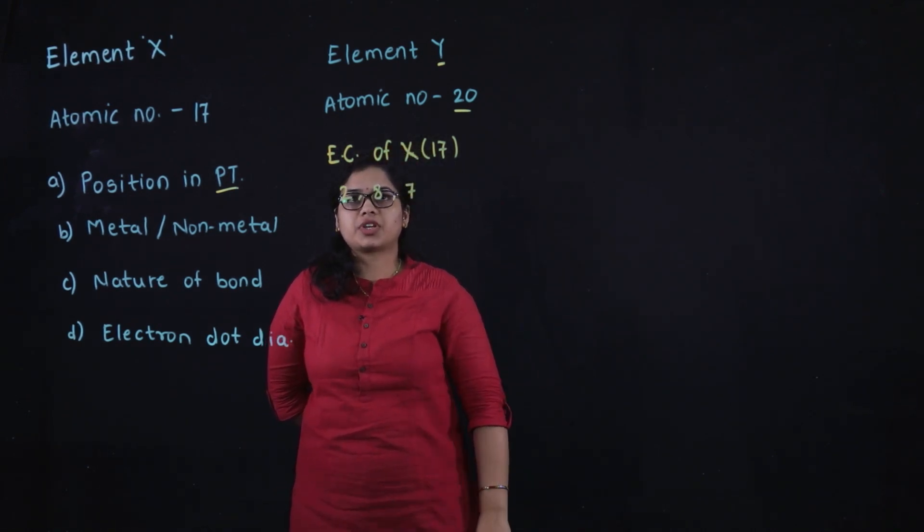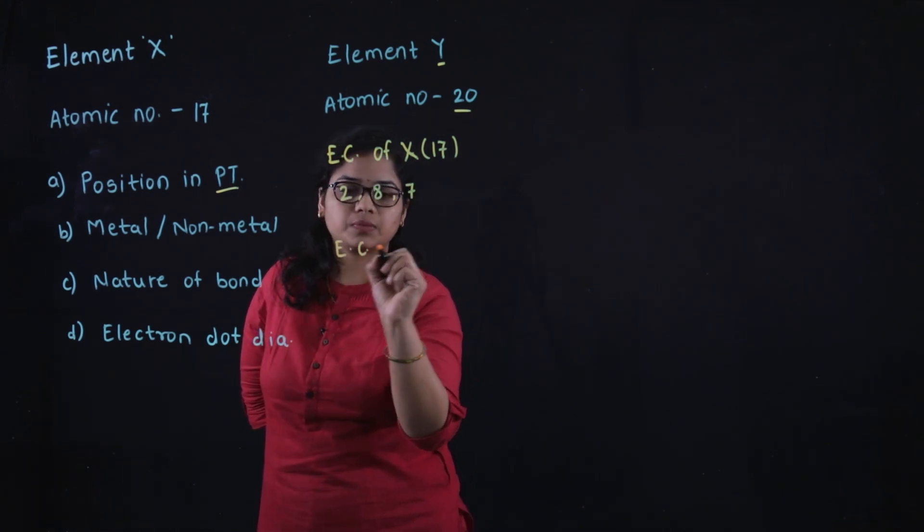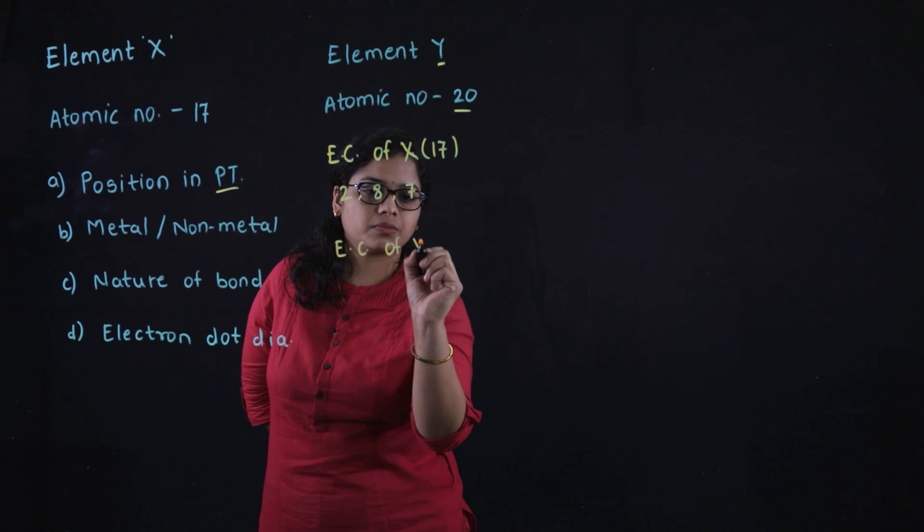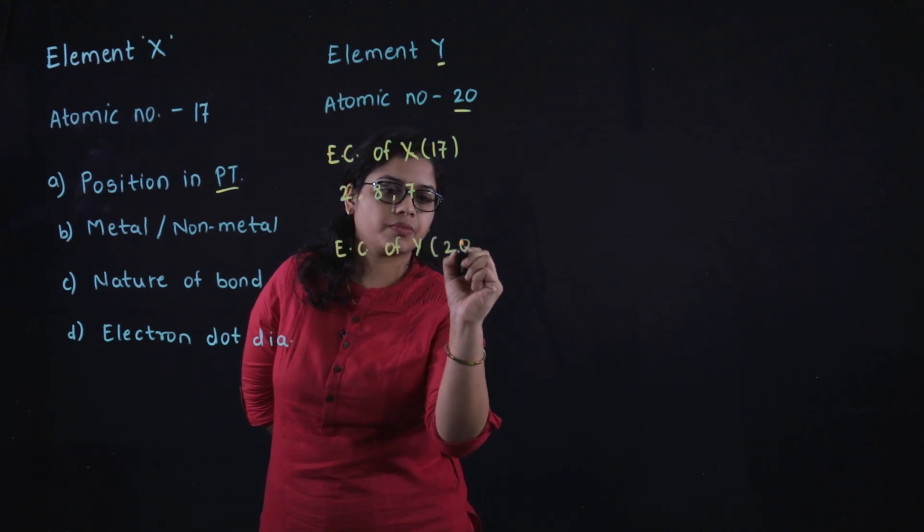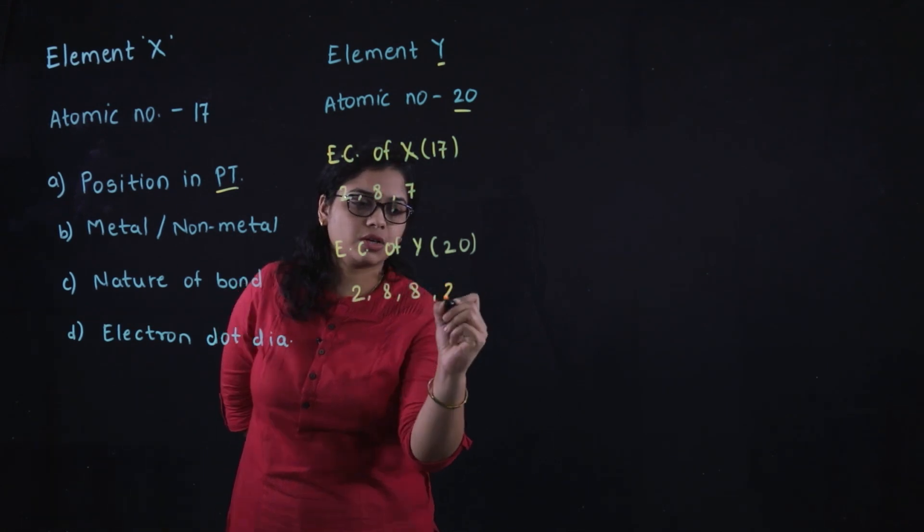The electronic configuration of Y with atomic number 20 is 2, 8, 8, 2.